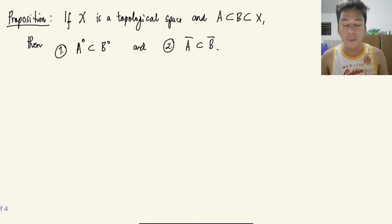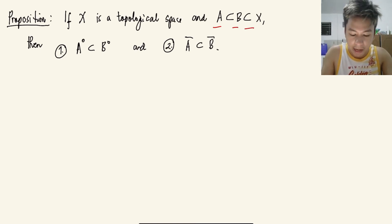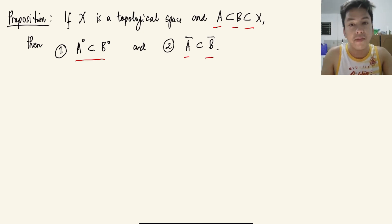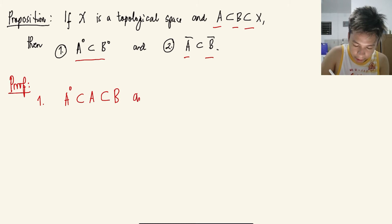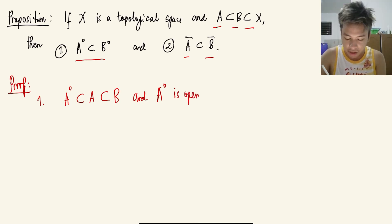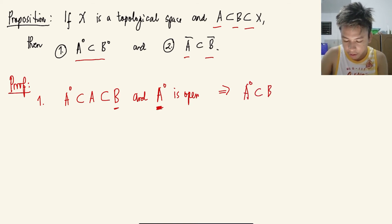Our first proposition: given a topological space X with subsets A and B such that A is a subset of B and B is a subset of X, then the interior of A is a subset of the interior of B, and the closure of A is a subset of the closure of B. For part one: the interior of A is a subset of A, and by assumption A is a subset of B. Since the interior of A is open and is a subset of B, by note seven it follows that the interior of A is a subset of the interior of B.